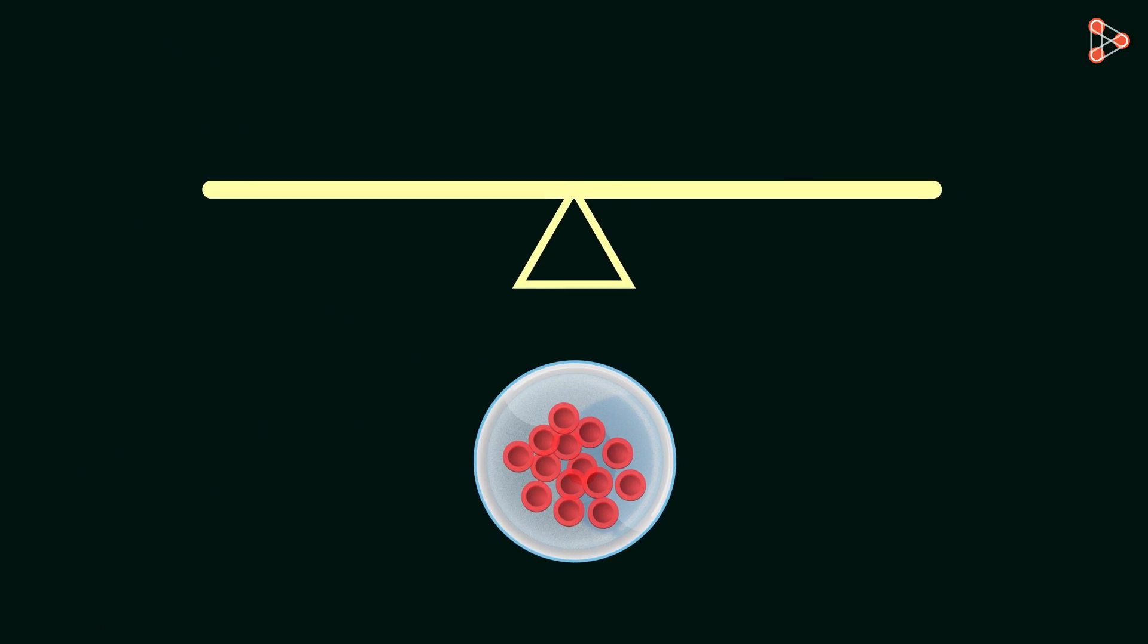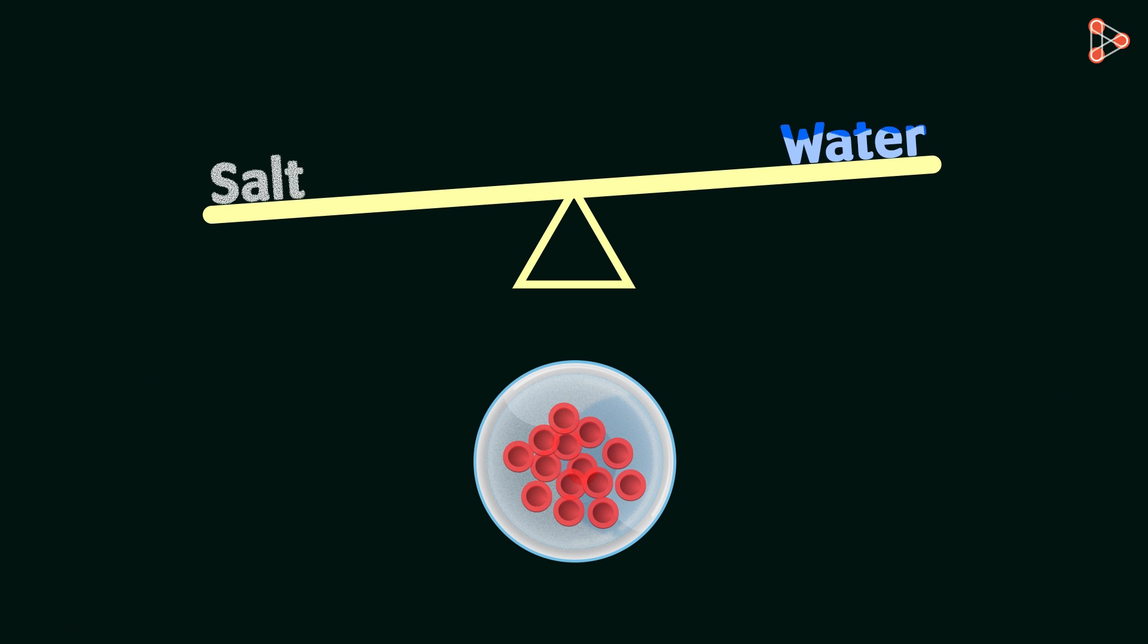In the first case, the water content in the surrounding solution was less as compared to the cells placed in it. In other words, the salt content of the solution is more, and therefore, this solution is a concentrated one. That is the reason why the water molecules moved from inside the cells to the outside solution as the concentration of water was higher within the cells. Hence the cells started shrinking.